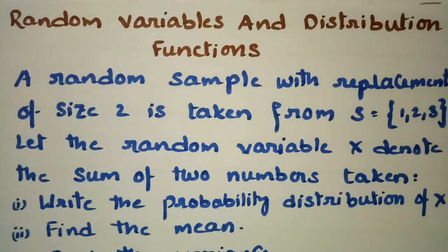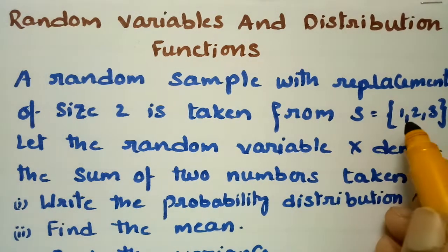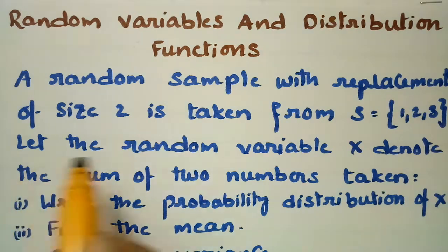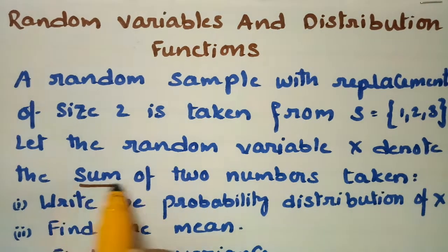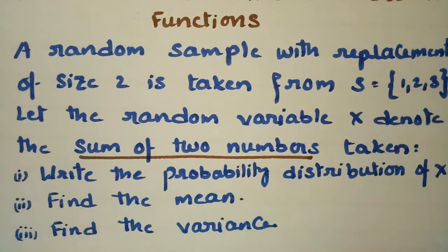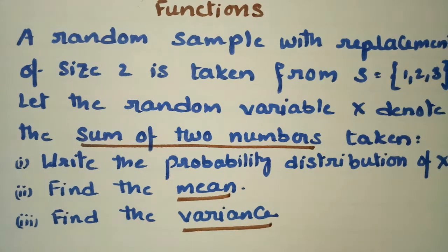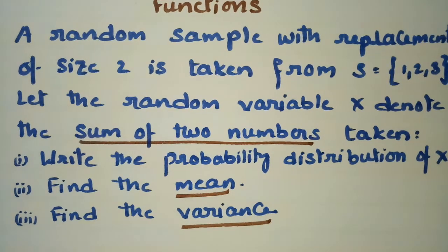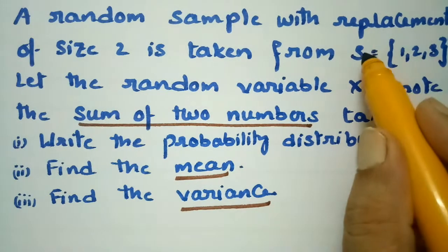In today's video I am going to explain a problem from random variables and distribution functions. A random sample with replacement of size 2 is taken from s = {1, 2, 3}. Let the random variable X denote the sum of the two numbers taken. We need to write the probability distribution of X, find the mean, and find the variance.